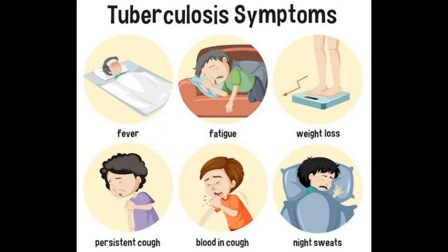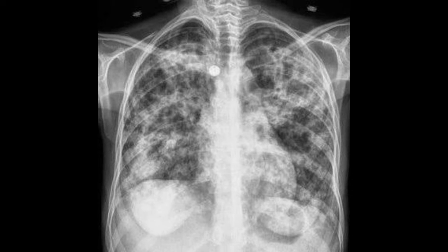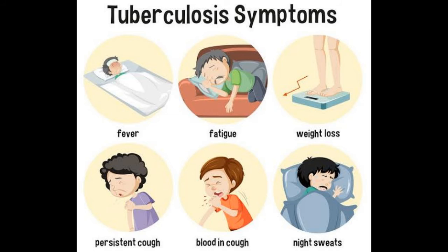Now let's see the clinical features of tuberculosis. In relation to the lungs, there is productive cough, which may be associated with hemoptysis, i.e. blood in the sputum. There is dyspnea, i.e. difficulty in breathing. Chest X-rays may show nodularity or pleural effusion, appearing as diffuse infiltrates in the lung parenchyma — radio-opaque patches. There is also fever, night sweats, fatigue, and loss of weight and appetite.